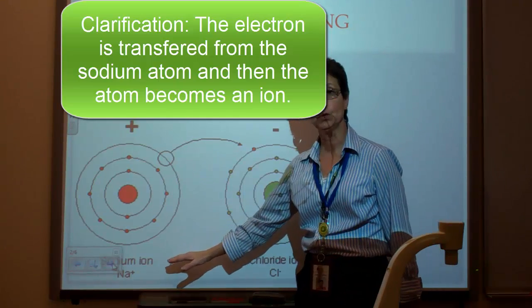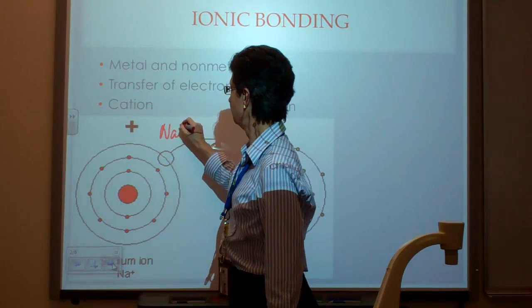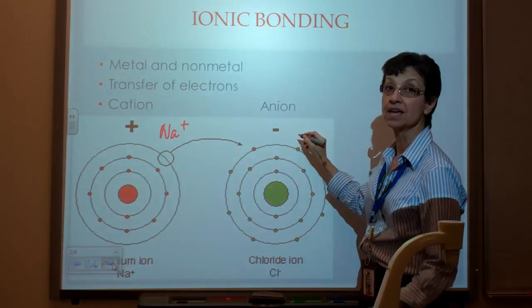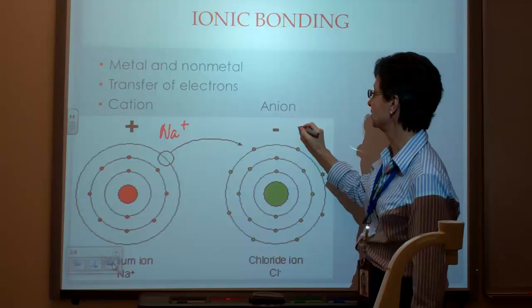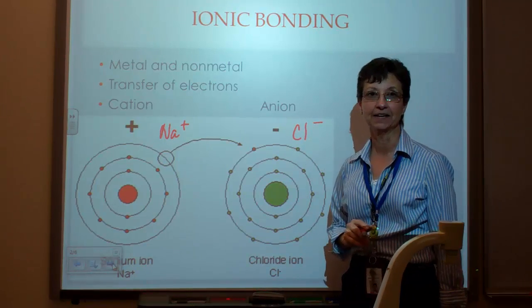These two become the sodium ion, positive ion, which is a cation, and this becomes the negative ion, which is the anion, the chloride ion.